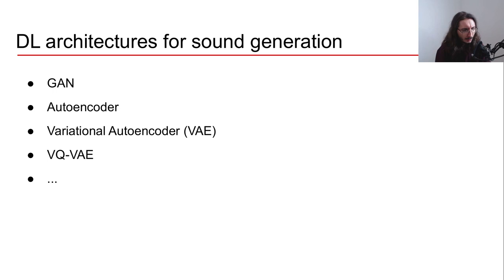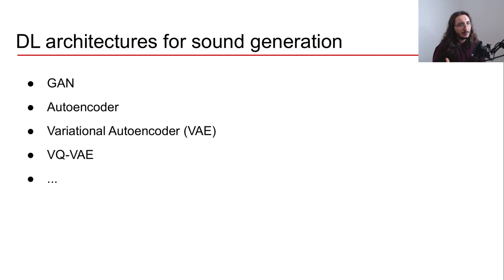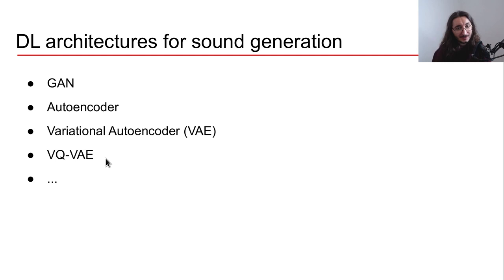Moving on to deep learning architectures for sound generation, the ones that appear most frequently in research are: GANs (generative adversarial networks), autoencoders, variational autoencoders, and VQ-variational autoencoders — the last of which was used by OpenAI for the Jukebox music generative system. This is a good high-level overview of the main architecture types.